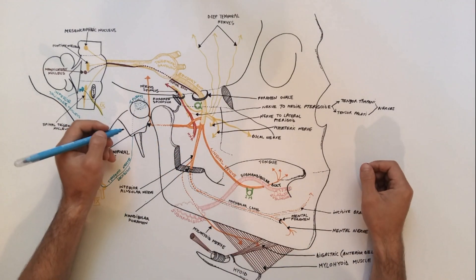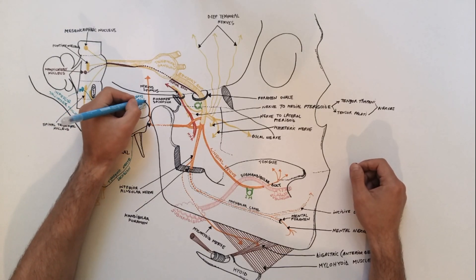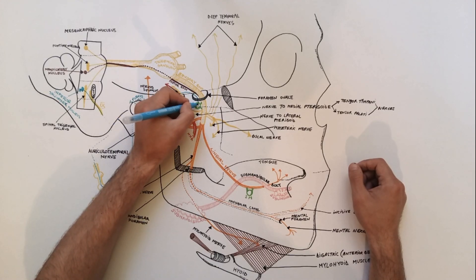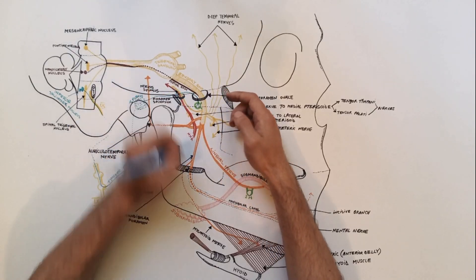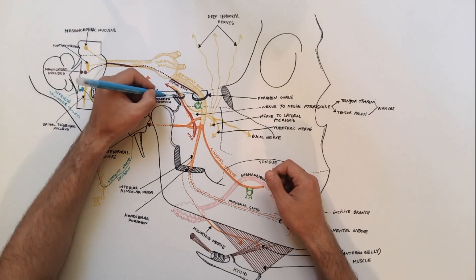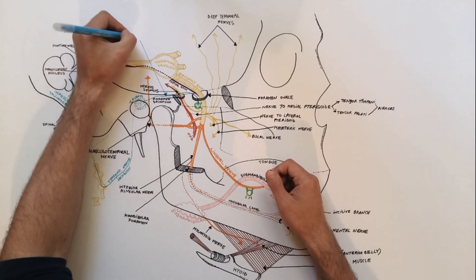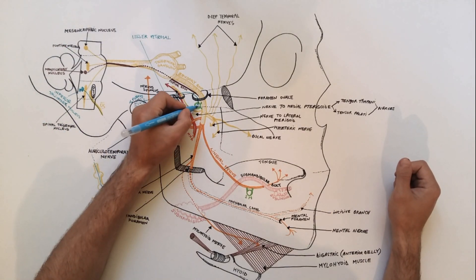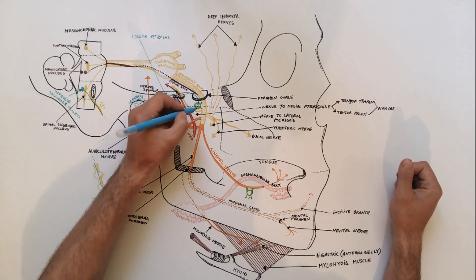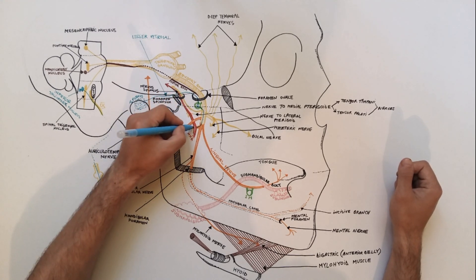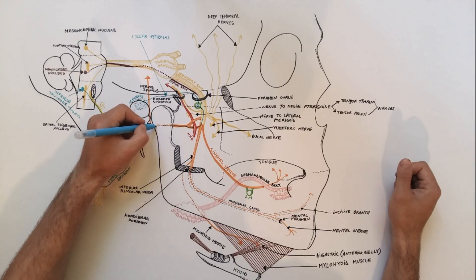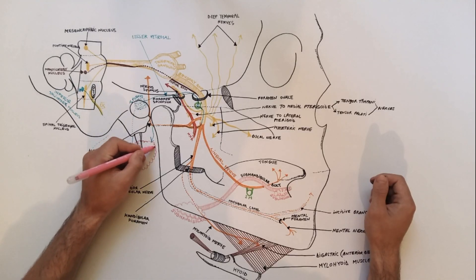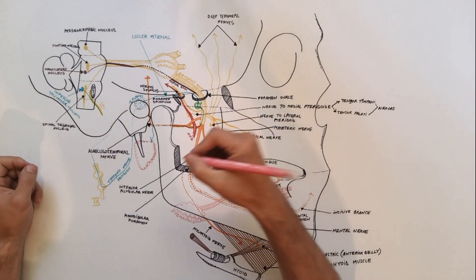The tympanic nerve arises from the inferior ganglion of the glossopharyngeal nerve and ascends to the tympanic cavity through a small canal, the inferior tympanic canaliculus. In the tympanic cavity it divides into branches which form the tympanic plexus. From the tympanic plexus, parasympathetic secretory fibers continue as the lesser petrosal nerve, which will enter the otic ganglion. Here the preganglionic fibers will synapse with the postganglionic neurons. From the otic ganglion, the parasympathetic postganglionic fibers will pass to the auriculotemporal nerve via communicating branches, and from the auriculotemporal nerve the parasympathetic fibers will reach the parotid gland.